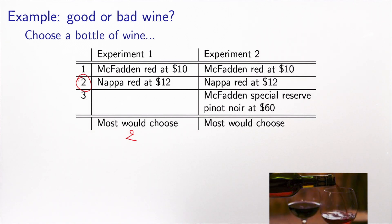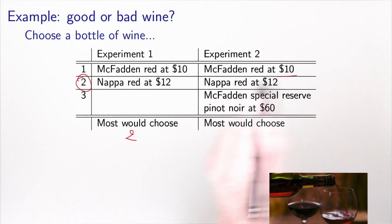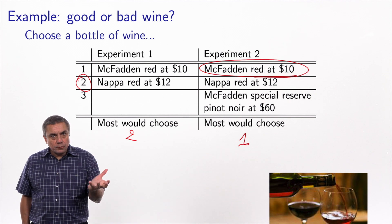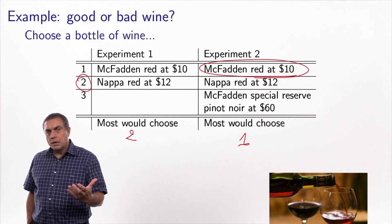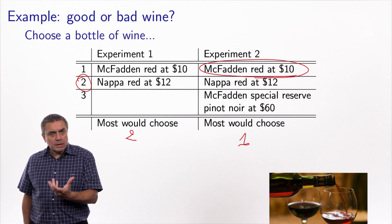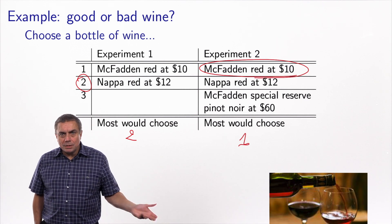In the second experiment, they again offered the McFadden red at $10 and Napa red at $12, but also added a McFadden Special Reserve Pinot Noir at $60. At $60, not many people chose it, but in this case most people selected the McFadden red at $10. Why? It's about perception: seeing a McFadden Special Reserve at $60 signals that McFadden makes very good wine, so the $10 bottle seems like a great deal.